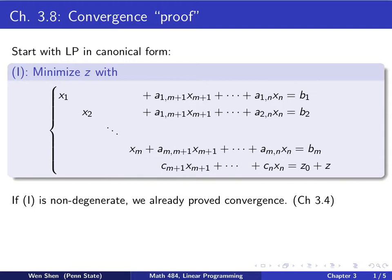The simplex method starts with the LP problem in canonical form, which we presented here. This is the canonical form. Here, the basic variables are x1 to xm, and I have n variables. n is bigger than m.